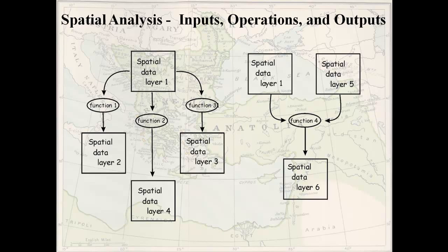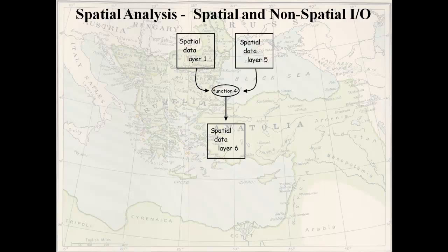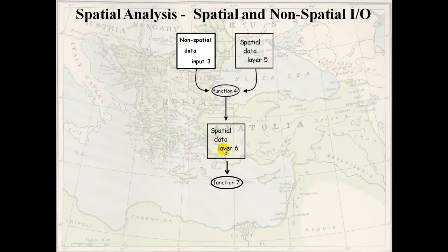Sometimes these sequences can branch or combine. In one example you've got one data layer that you do three different things to and create three different output data layers. In another, you take two input data layers, do something to them, and make a third — which might be an example of overlay from the last video. Data doesn't have to all be spatial; that's what joins and relates are about. You can join non-spatial data to spatial data — for example, joining a shapefile of counties with a spreadsheet of county information — to create a new spatial data layer that has both the geometry and the non-spatial information.